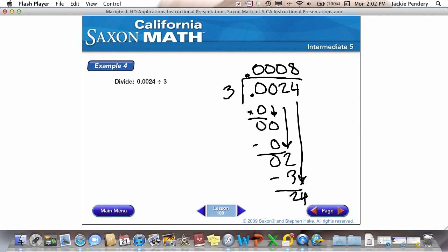So this was the long way to do it, by bringing down all of the zeros. The short way is to write your problem and say, I bring up my decimal. 3 doesn't go into 0. Doesn't go into 0. Doesn't go into 2. Goes into 24, 8 times. Write the 8 up above. And then just put in placeholder zeros.